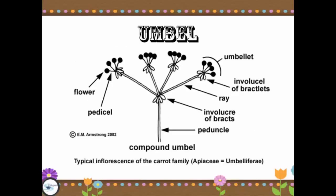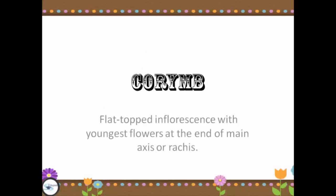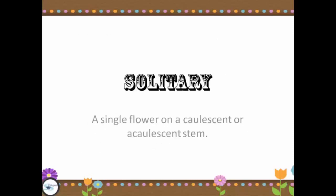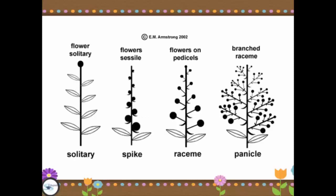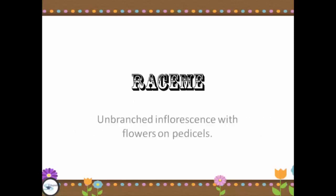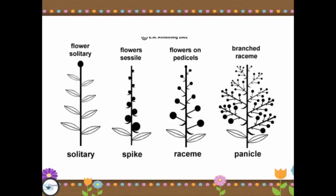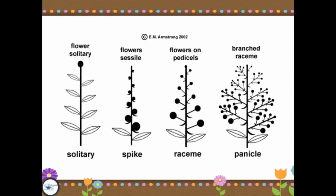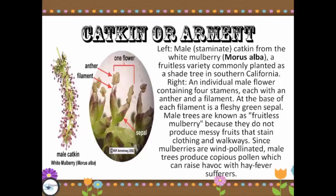Next, we have the umbel, which is the typical inflorescence of the carrot family. Next, we have the corymb, solitary, spike, raceme, and panicle. And next we have the catkin, also called an ament.